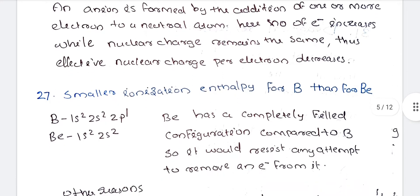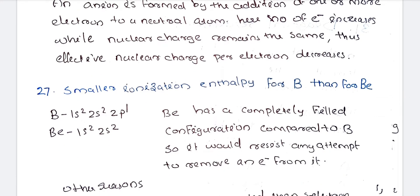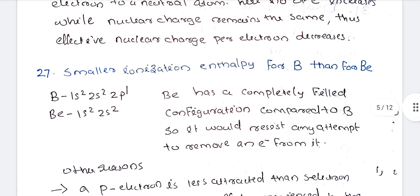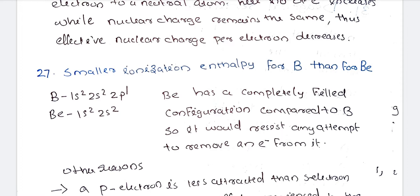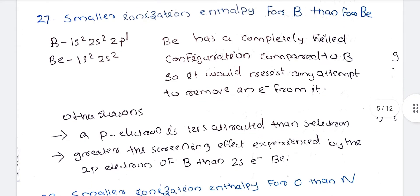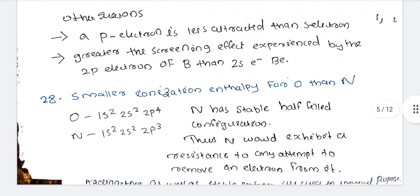Next, smaller ionization enthalpy of Boron than Beryllium. Beryllium has a completely filled configuration which is more stable. Another reason is that P-electron is less attracted than S-electron. There is greater screening effect experienced by the 2p orbital of Boron than 2s electrons of Beryllium.